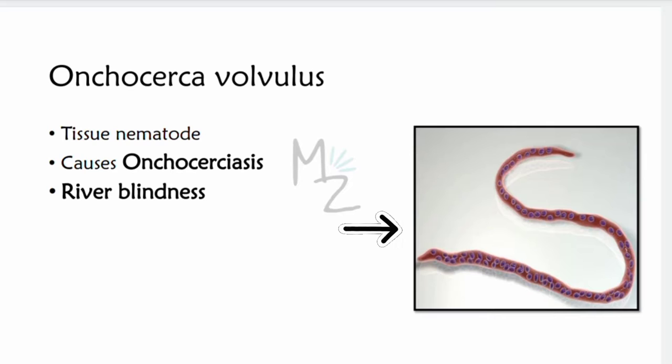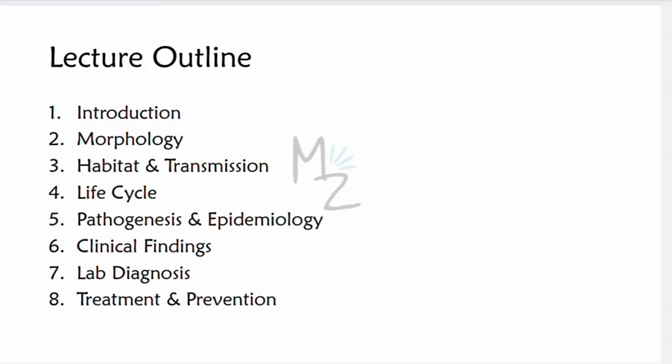In this picture you can see the Onchocerca volvulus — we'll discuss its morphology in detail and then you'll understand this picture. The lecture outline covers: morphology, habitat and transmission, life cycle, pathogenesis and epidemiology, clinical findings, lab diagnosis, treatment, and finally prevention.